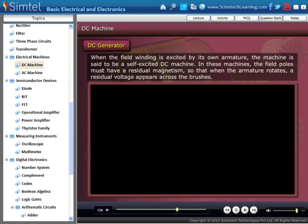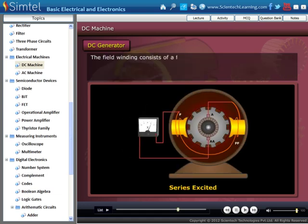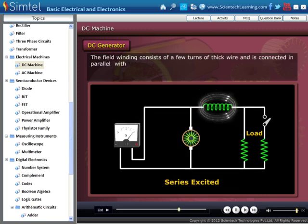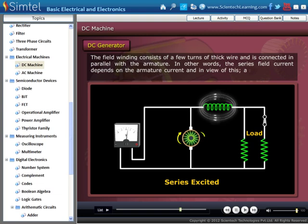First is series excitation. The field winding consists of a few turns of thick wire and is connected in parallel with the armature. In other words, the series field current depends on the armature current, and in view of this, a series field may be called a current operated field.